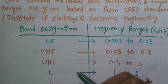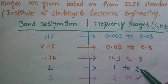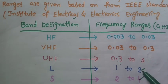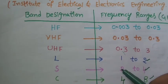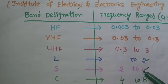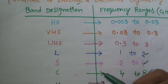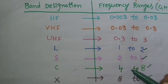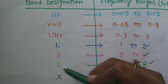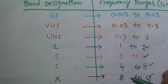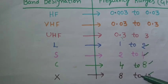For the L band, the frequency range is about 1 to 2 gigahertz. For the S band, the frequency range is about 2 to 4 gigahertz. For the C band, the frequency range is about 4 to 8 gigahertz. For the X band, the frequency range is about 8 to 12 gigahertz.